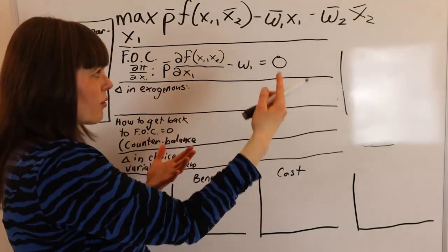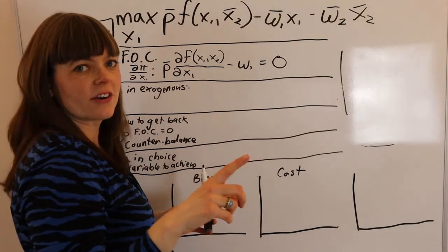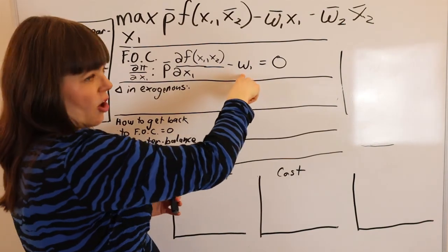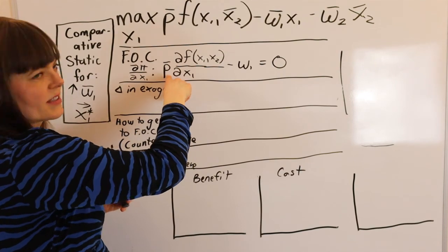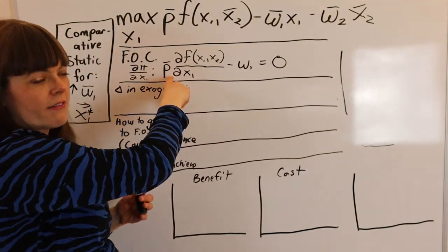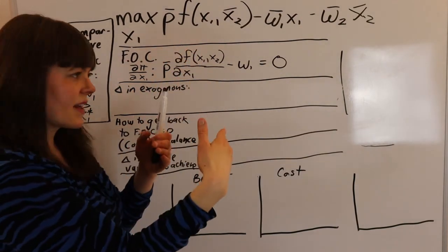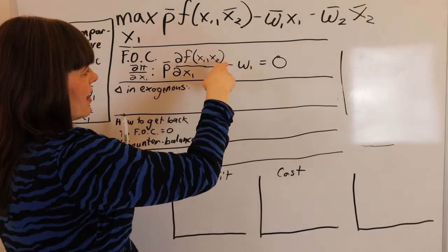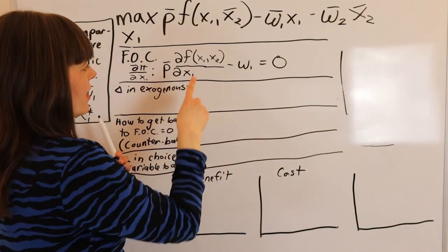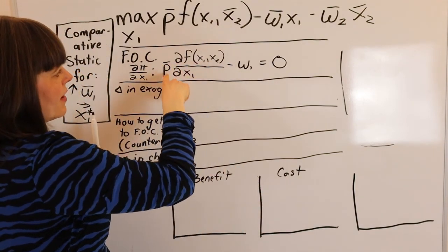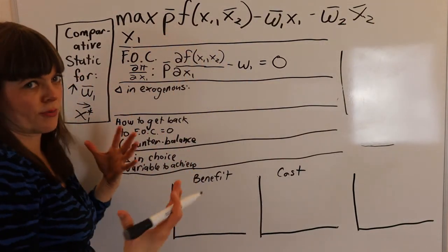Marginal cost is the hourly wage of the worker — we're thinking of hiring one extra worker hour, or extending a worker's hour by one unit. The cost is just the wage we have to pay them for that hour. The benefit is the price. Let's say it's an umbrella company: the price of an umbrella is $25 times the extra umbrellas produced by extending that worker's time by one hour. If they produce four extra umbrellas, the total benefit is $25 per umbrella times four extra umbrellas, so that's $100.